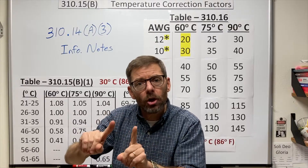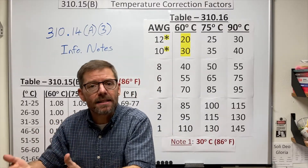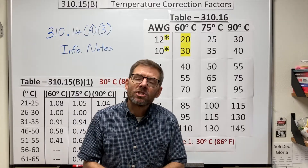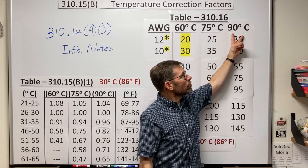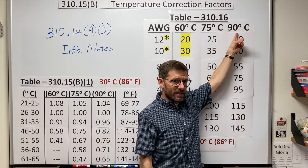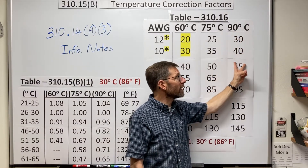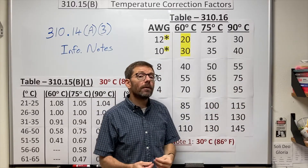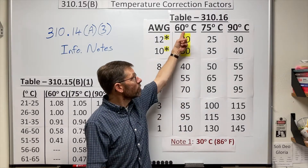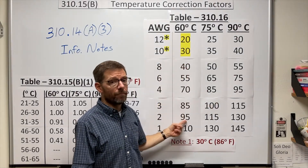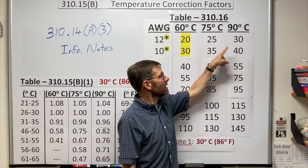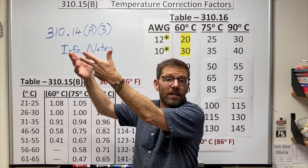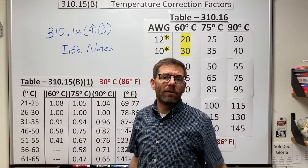Here's a quick note on residential attics. In residences, you're often using Romex or NM cable, which has an interesting quality — it's constructed to the 90 degrees Celsius rating, so I can start my calculations with those ampacities. However, I can never run more amps on it than those in the 60-degree column. So that reduction in ampacity is often enough to accommodate your attic temperatures, especially if they're well ventilated.